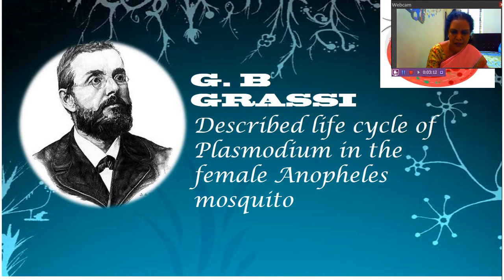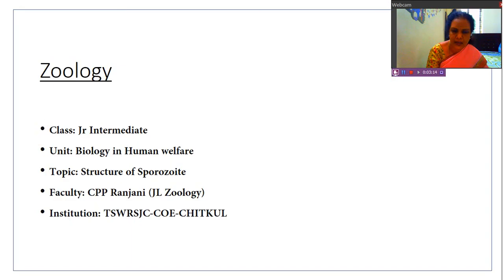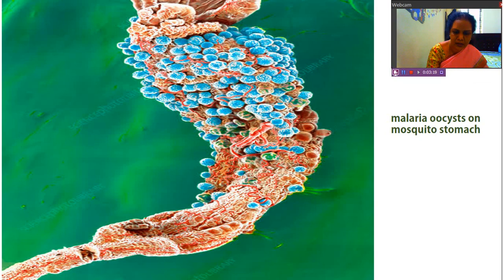Now we will see how this disease is spreading. This disease spreads through sporozoites. The infective stage is the sporozoite, and it is spread by inoculation.